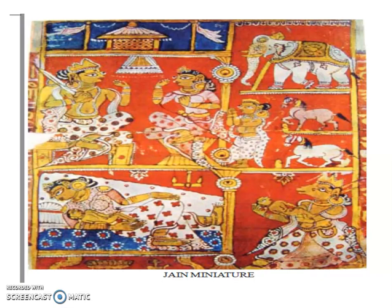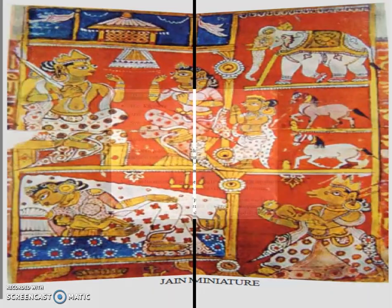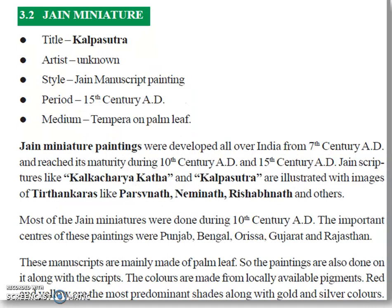See this picture — this is a Jain Miniature painting. Title: Kalpasutra. Artist: Unknown. Style: Jain Miniature Manuscript Painting. Period: 15th century AD. Medium: Tempera on Palm Leaf.